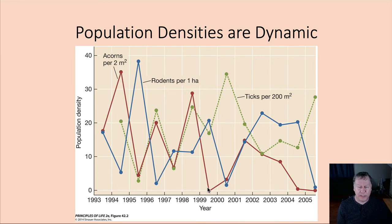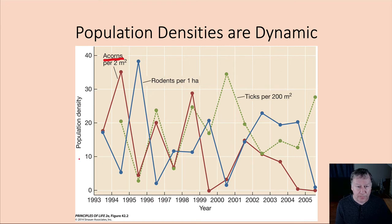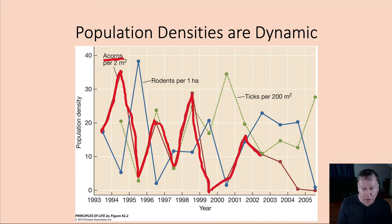It's important to understand that population densities are dynamic — they change year to year and even within seasons. Looking at a graph of acorns (shown in red), in 1994 there was a high population density, then a major drop, then it went up and down, showing pretty major fluctuations from year to year. Acorns are the seeds of oak trees, and we're looking at how many occur per square meter.